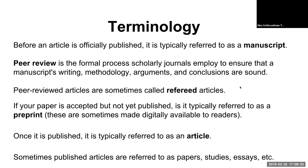Peer-reviewed articles are sometimes called refereed articles — especially in grad school you might have come across this term. It's just a synonym. If your paper is accepted but not yet published, it's typically referred to as a preprint. Preprints are sometimes made digitally available to readers, meaning the manuscript has been accepted but there might be a couple of copy-editing things and final tweaks before it's officially published. Once the manuscript is published, it's referred to as an article — though published articles, depending on the discipline, are sometimes called papers, studies, or essays.